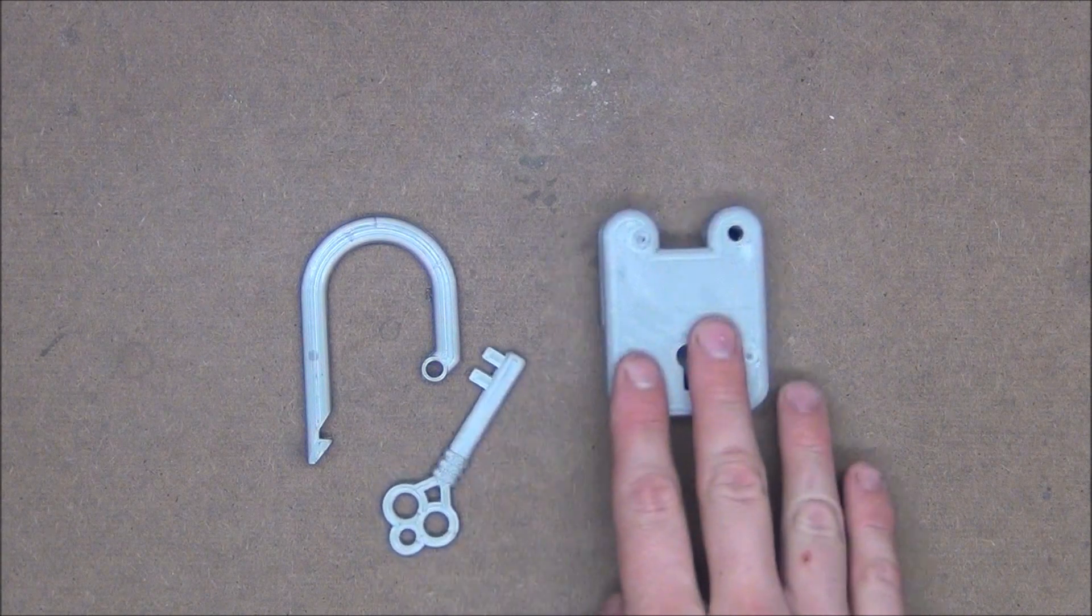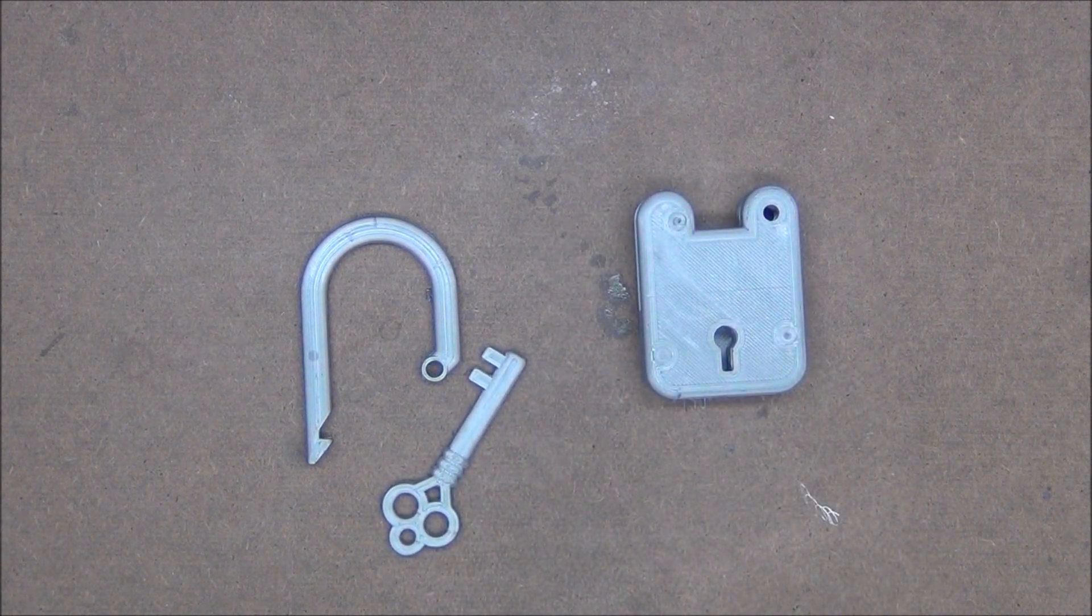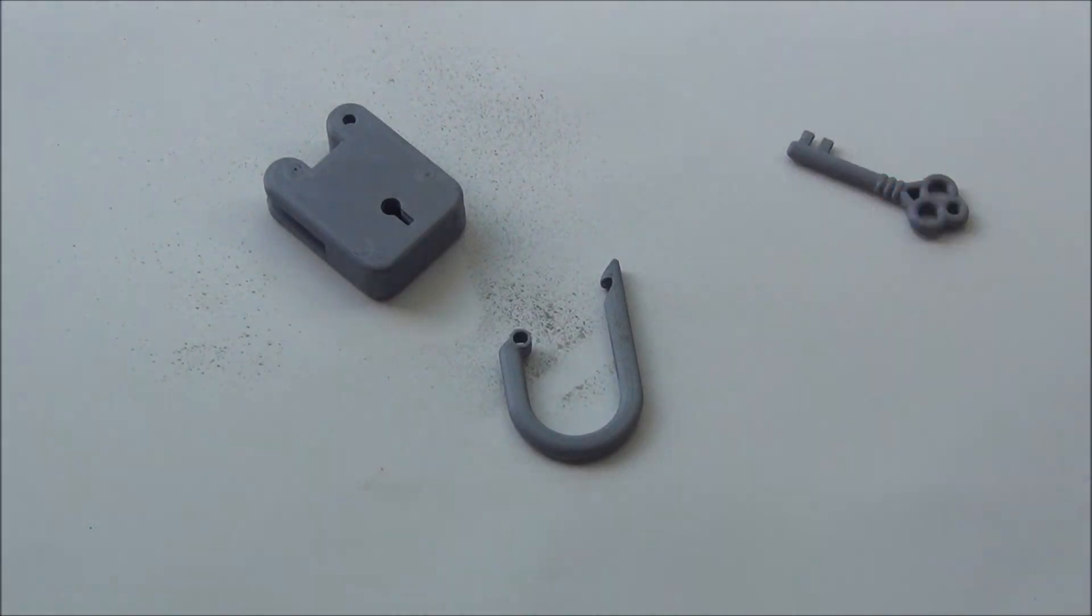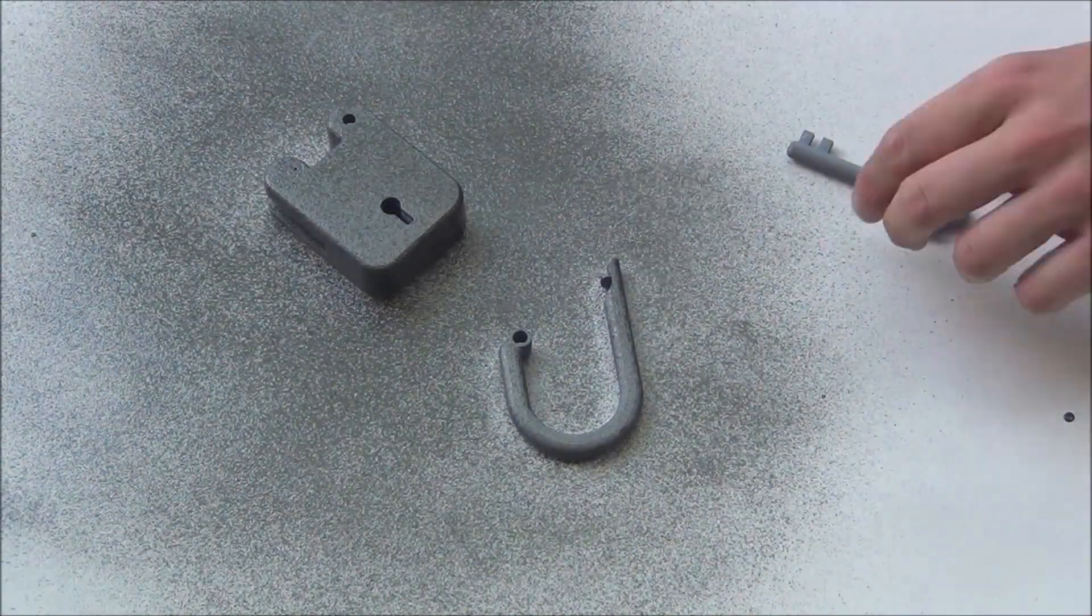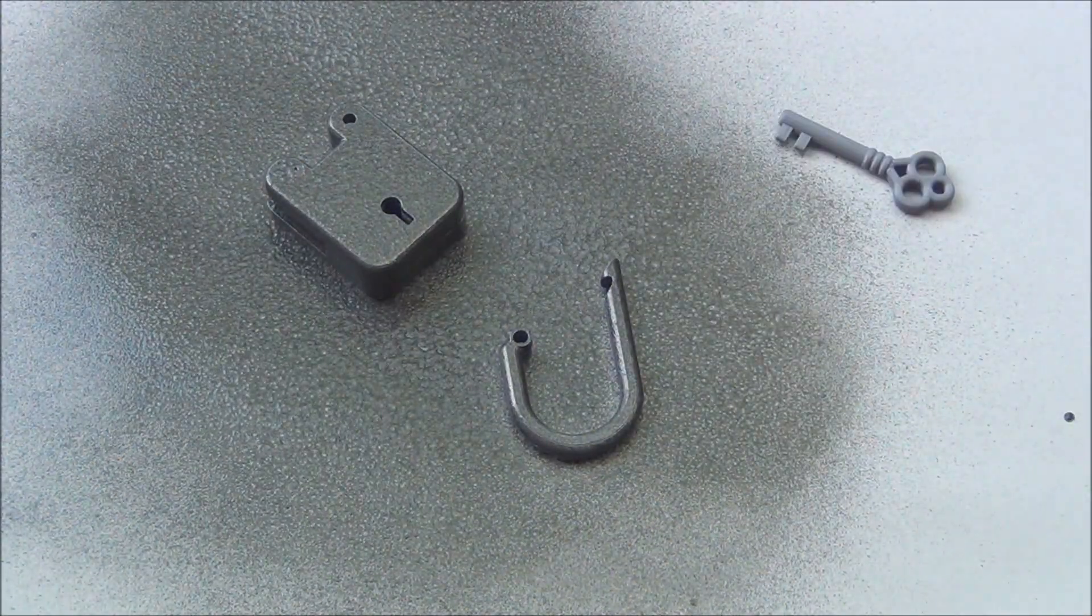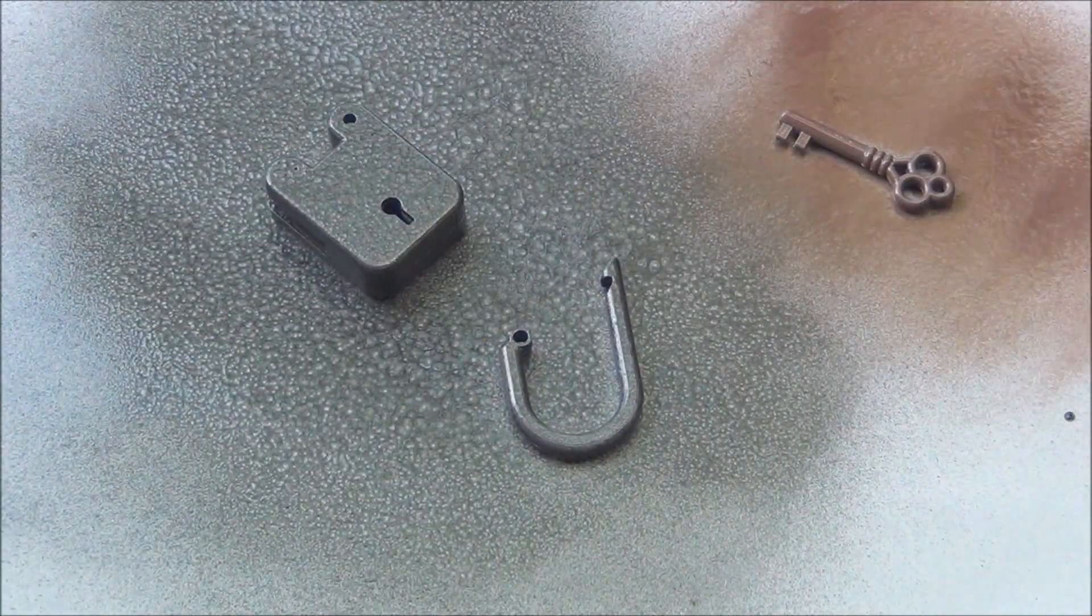Now that we have the main lock, loop, and key all assembled and ready to go, let's go ahead and give them a cool paint job to make them look more realistic. I'm using Krylon's hammered copper and hammered matte cast iron spray paints for this and I'm really liking it.